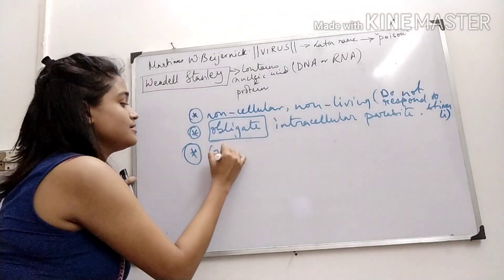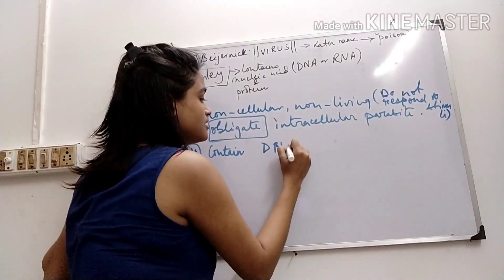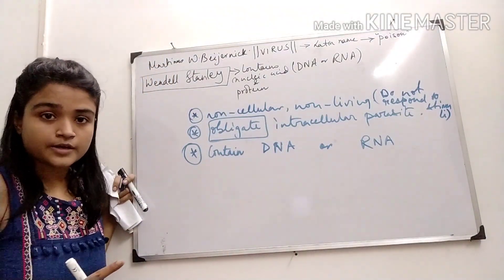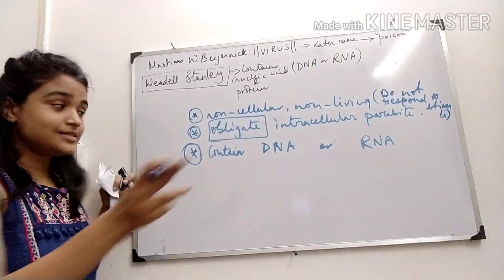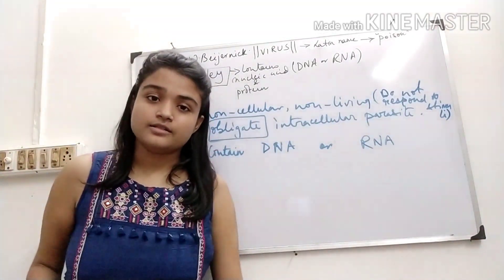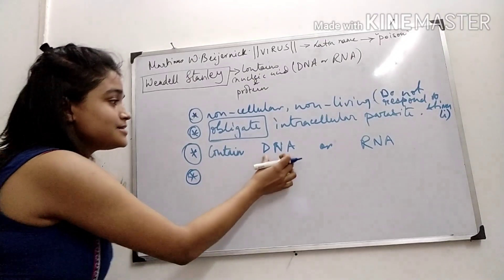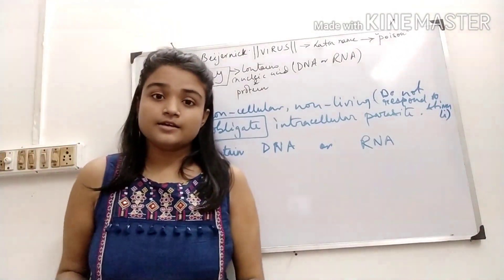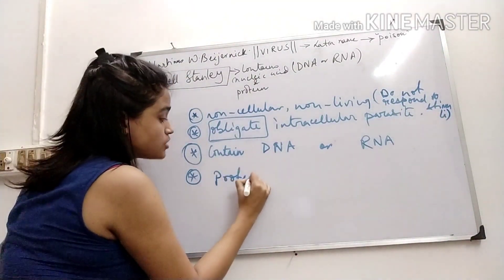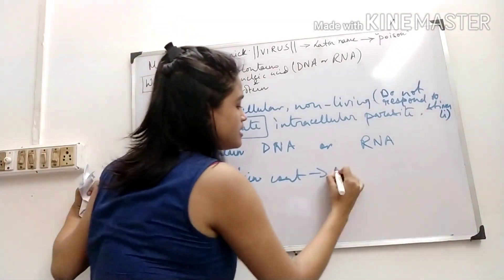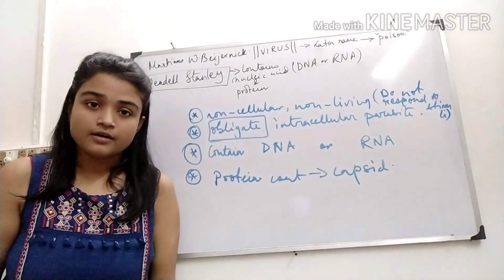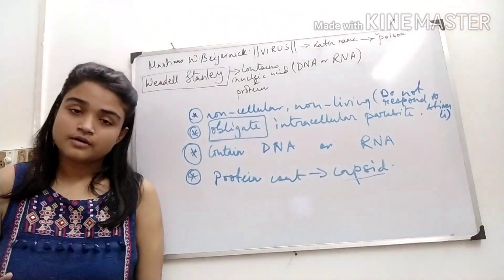They contain DNA or RNA, but they will not contain both — they will contain either DNA or RNA. The DNA can be double-strand DNA, single-strand DNA, double-strand RNA, or single-strand RNA. This nucleic acid is covered and protected by a protein coating called the capsid. So the DNA or RNA is protected by a covering called the capsid, which is a protein coat.